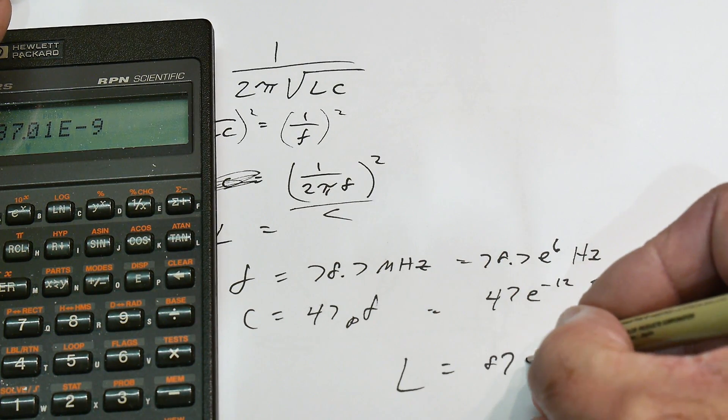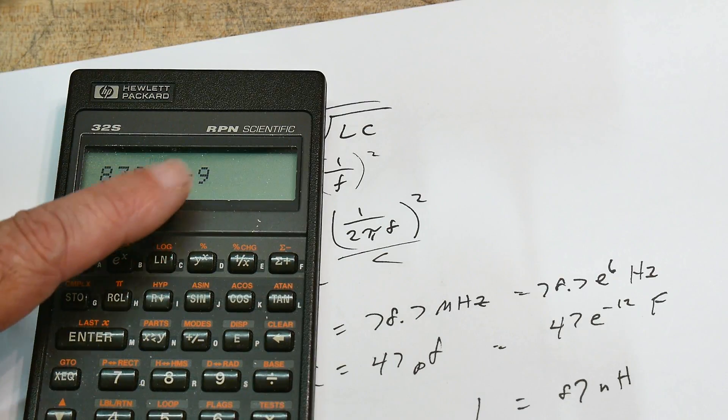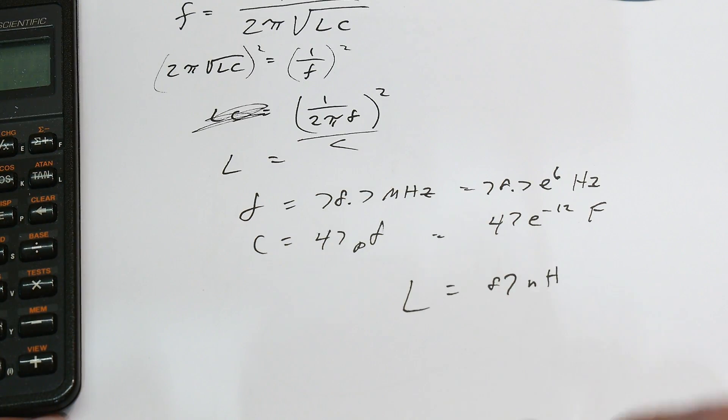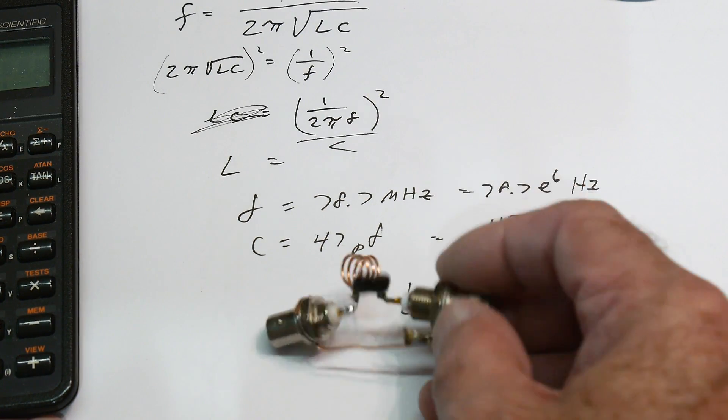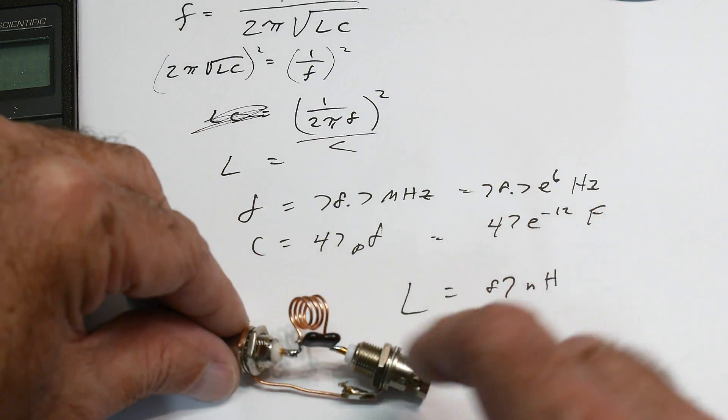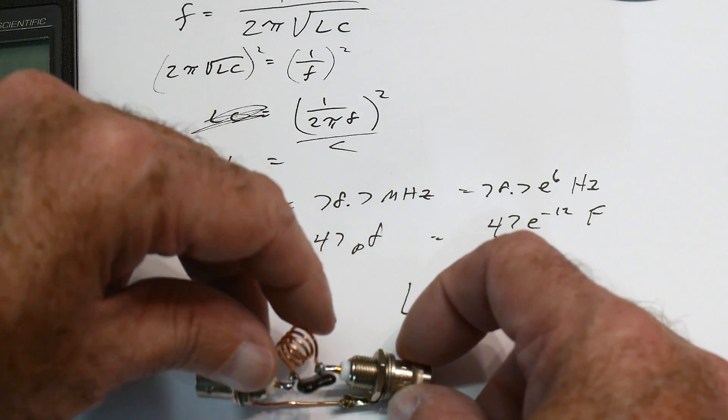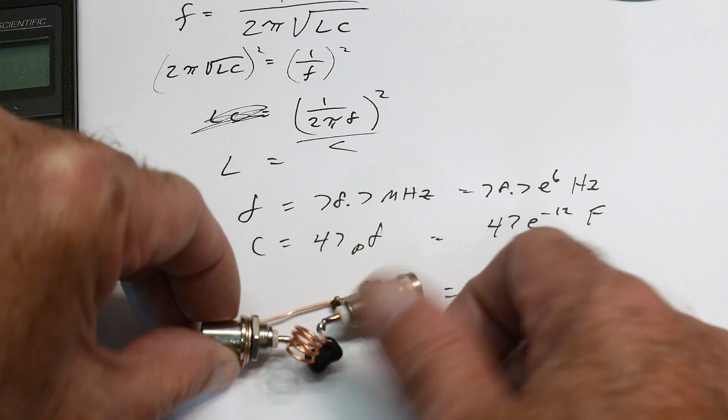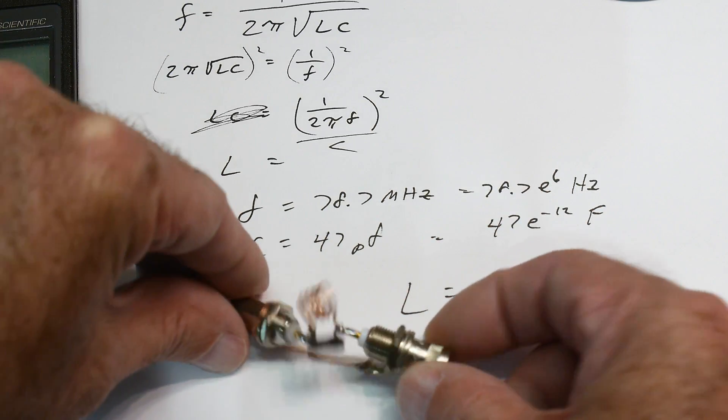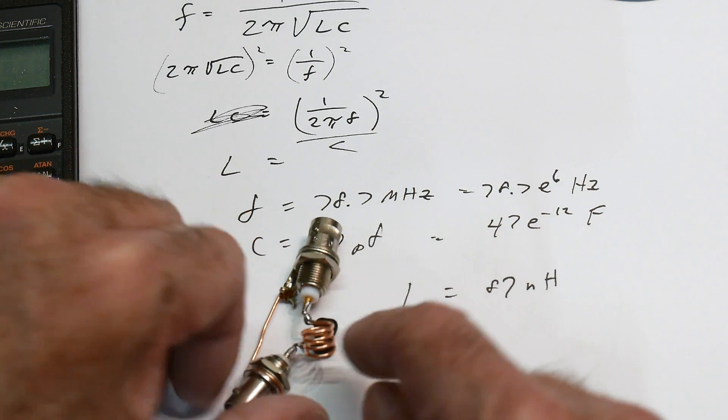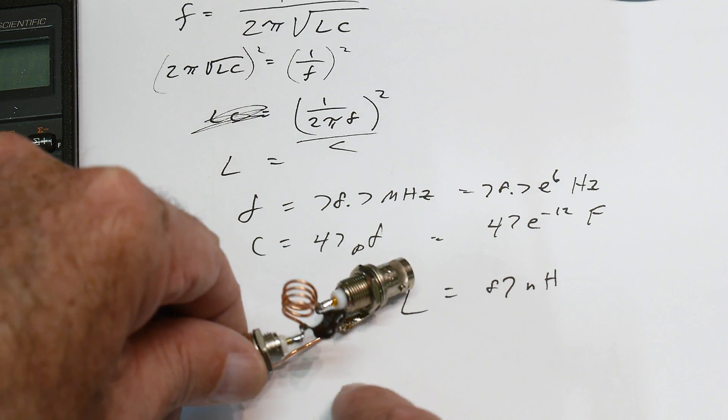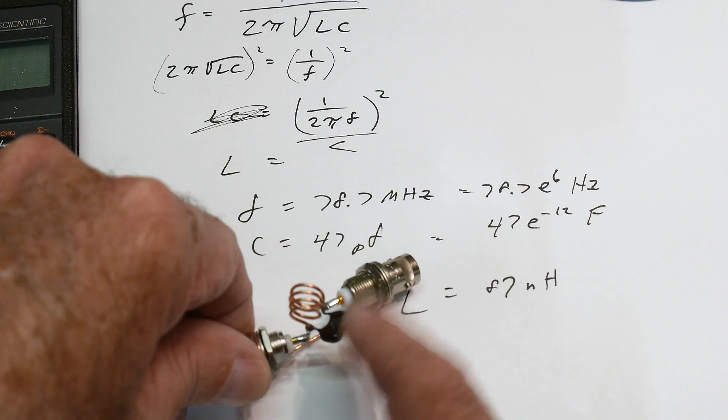87 nanohenrys. Okay, e to the minus 9. All right, there you go, 87 nanohenrys. This is the circuit that we measured, a parallel resonant circuit. Some people say anti-resonant, but a resonant circuit. And we have calculated an unknown inductor from a known frequency and a known capacitance.